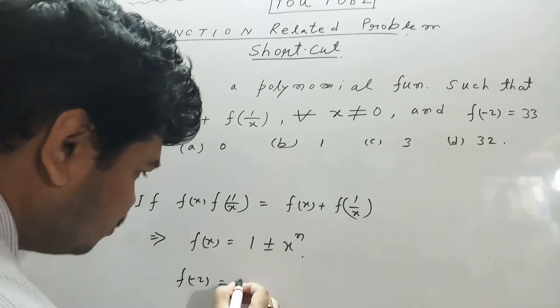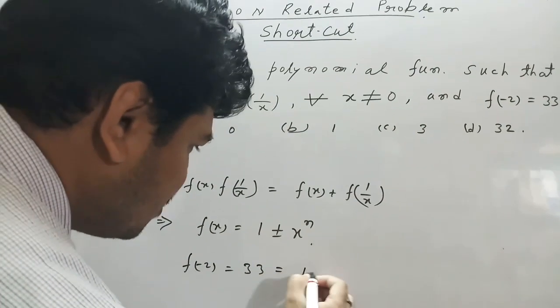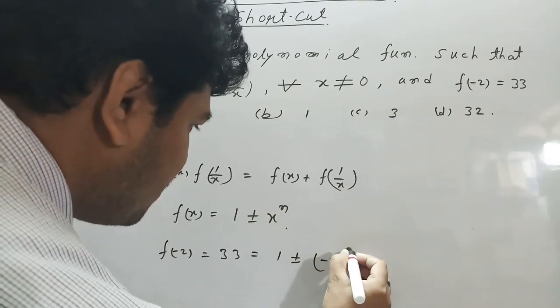But in the question mentioned that f(-2) is 33. Therefore,